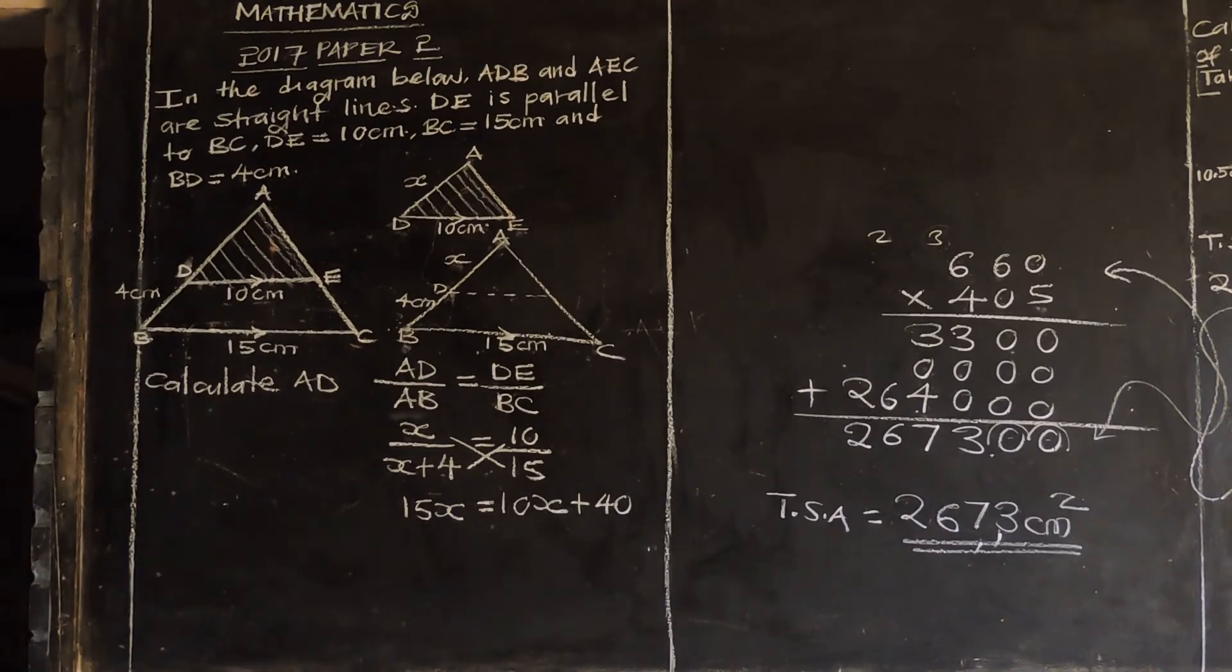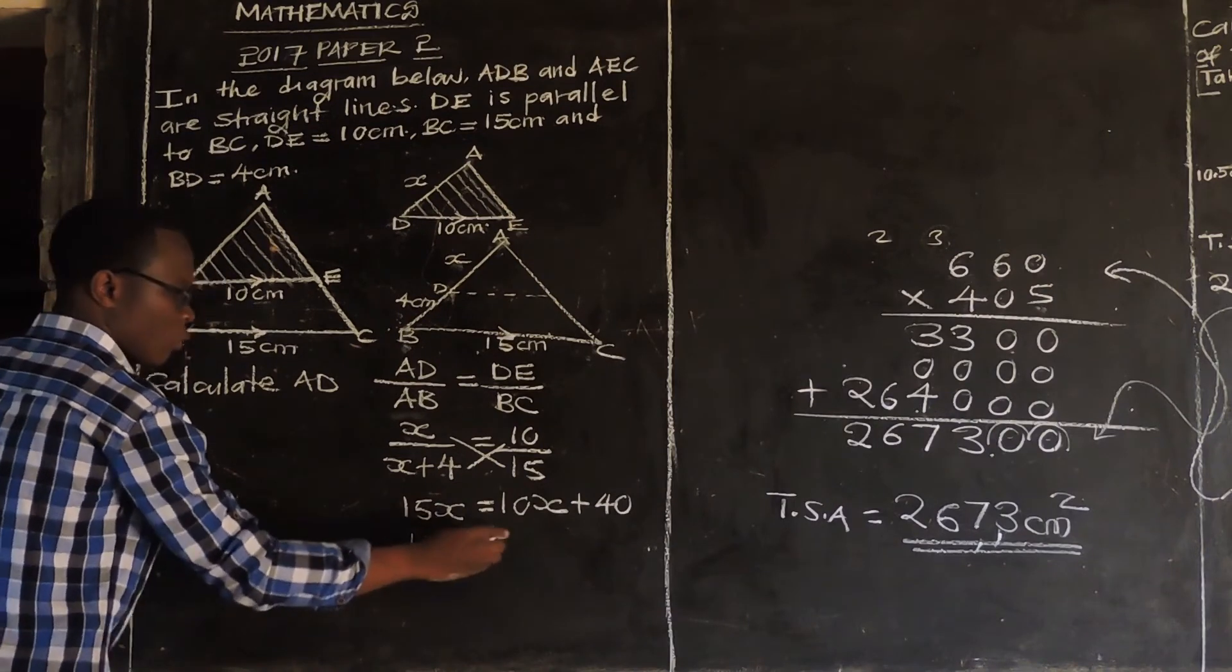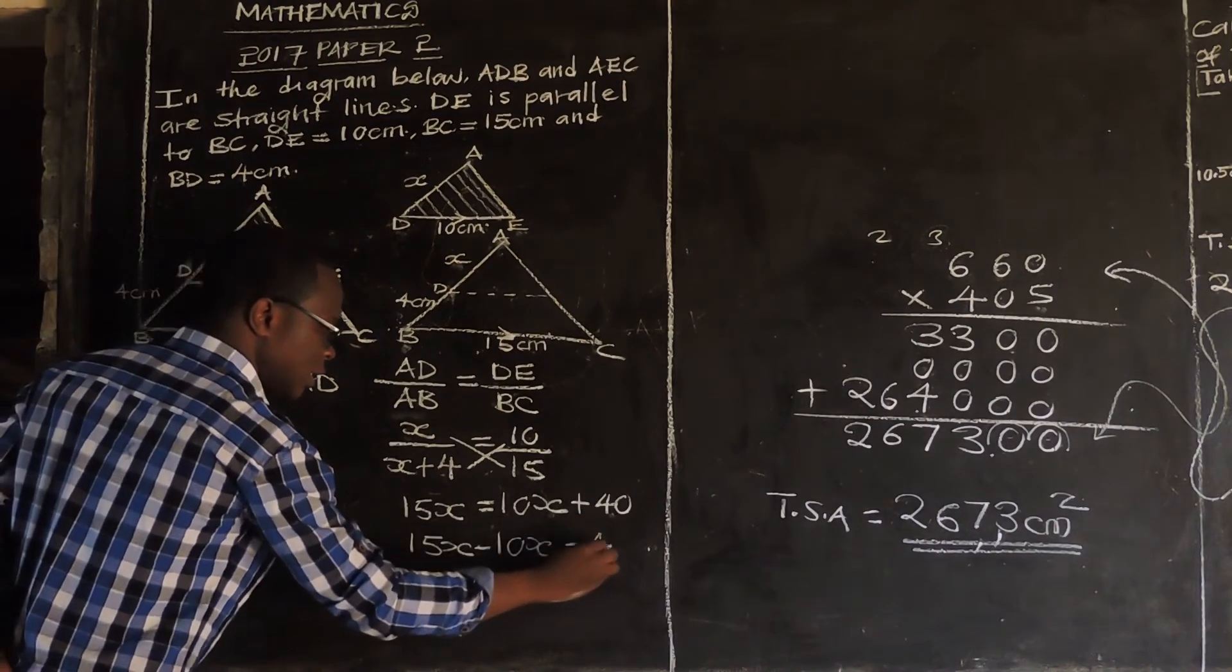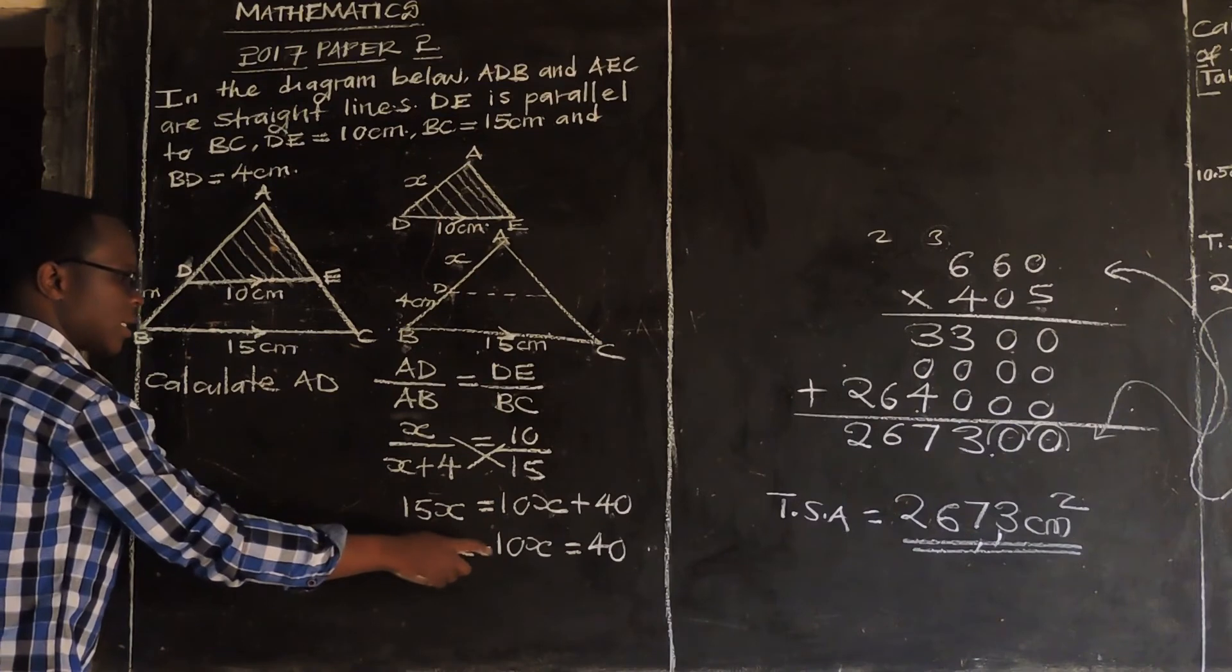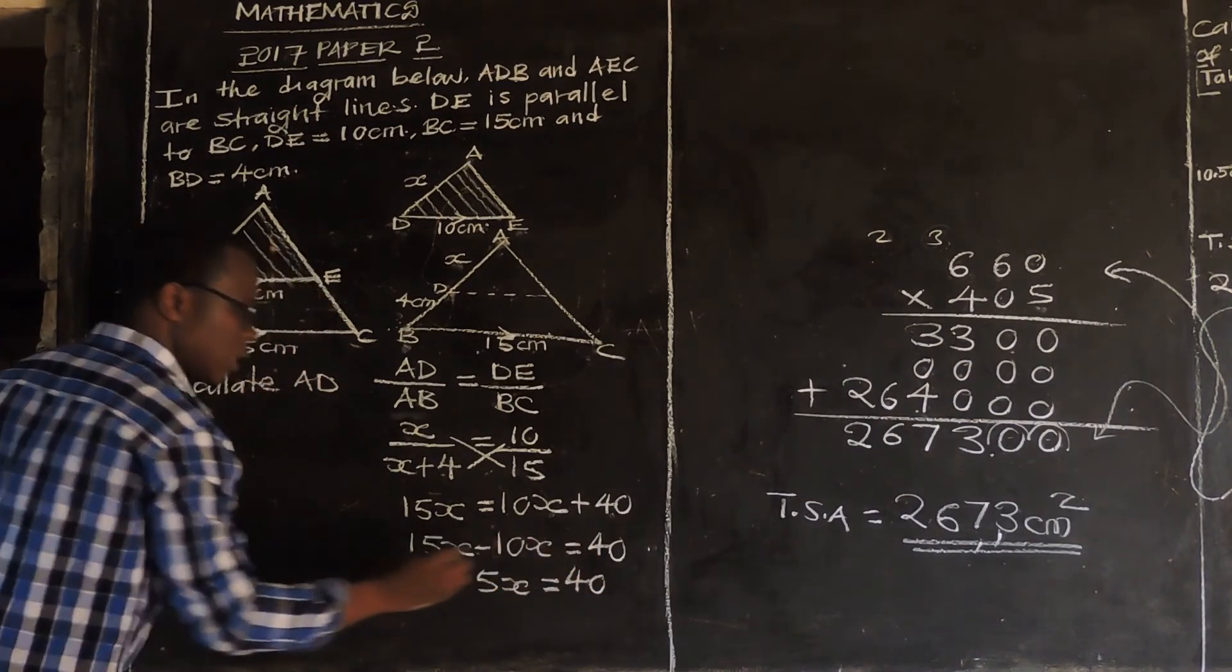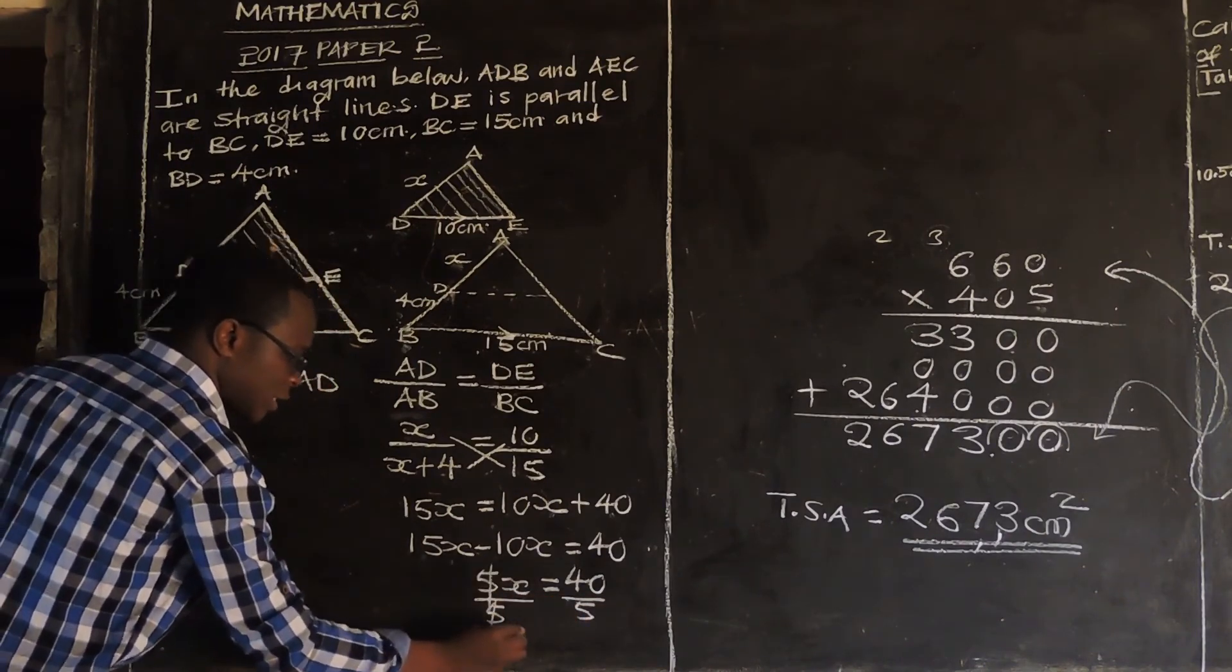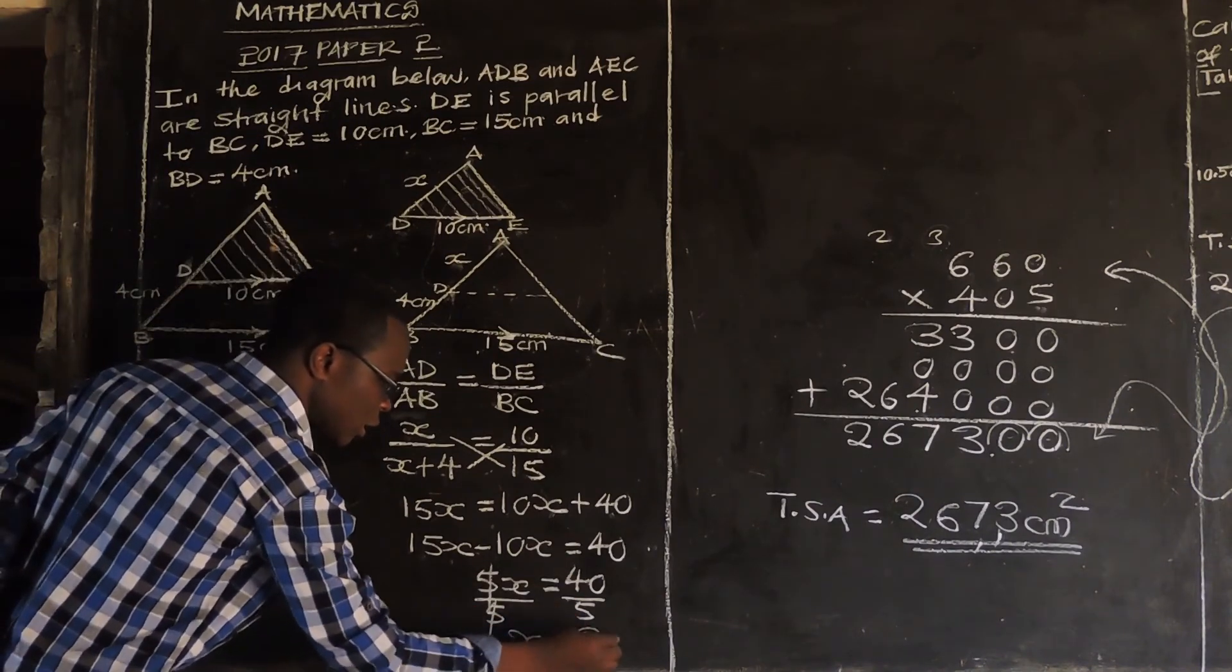So at this level what we are going to do is we are going to collect the like terms. So these two are like terms. So we are going to have 15X. When you transpose this positive 10X on the other side we are going to have negative or minus 10X is equal to 40 this side. Then you say 15X minus 10X you get 5X is equal to 40. Then for us to remain with X divide both sides by the coefficient of X which is 5. So we say over 5, over 5. These two are going to go, X is equal to, how many times can 5 go into 40? It's 8. So we have got 8 centimeters.